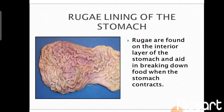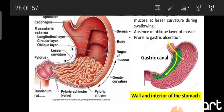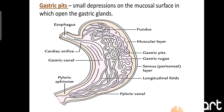Rugae are temporary mucosal folds found on the interior aspect of the stomach, useful for breaking down food when the stomach contracts. They are temporary in nature — as soon as the stomach fills, they vanish. The longitudinal furrow is formed between the longitudinal folds of mucosa at the lesser curvature during swallowing. Most food first contacts this longitudinal furrow — known as the gastric canal — making it prone to gastric ulceration.